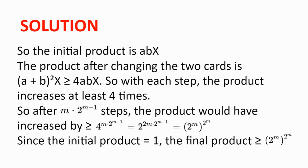So after m multiplied by 2 to the power of m minus 1 steps, the product would have increased by 4 to the power of m multiplied by 2 to the power of m minus 1 times, which is the same as 2 to the power of m times. So if the initial product is 1 — because all the numbers are initially 1 — the final product is at least 2 to the power of m, to the power of 2 to the power of m.